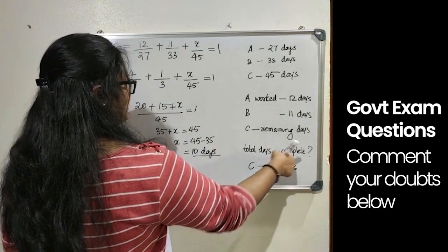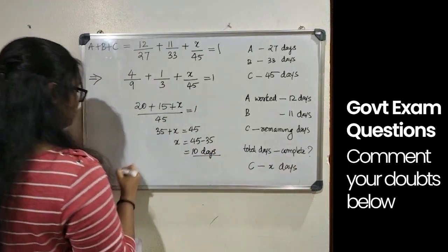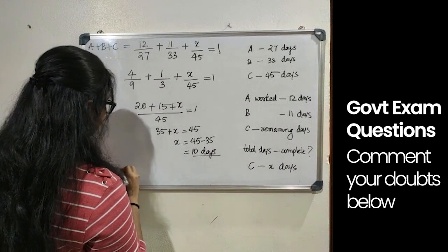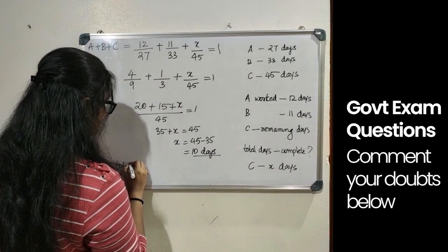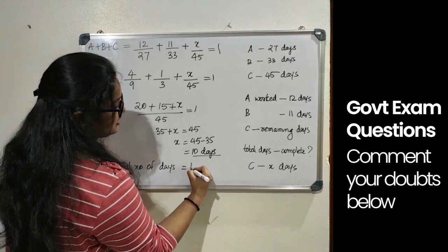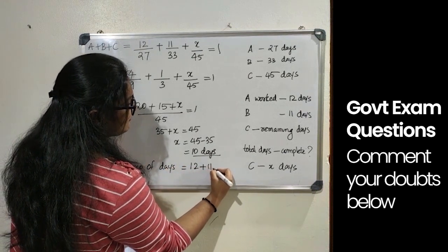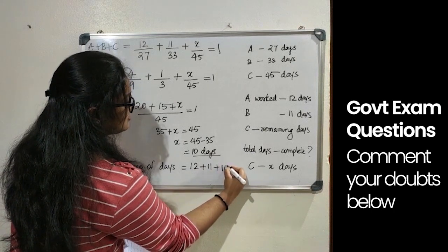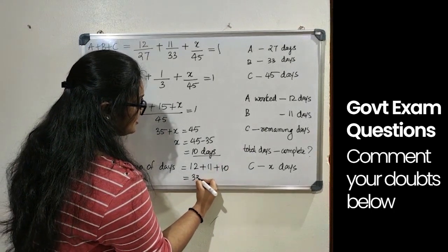35 plus x equals 45, x equals 45 minus 35 and that equals 10. So C worked for 10 days. Total number of days equals 12 plus 11 plus 10, that's 33 days.